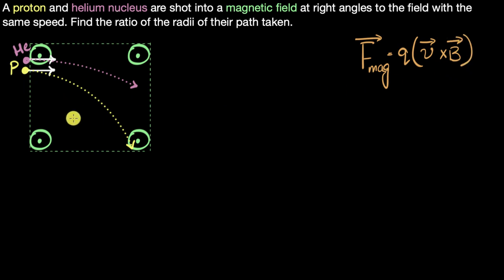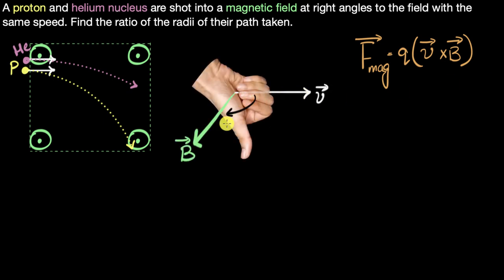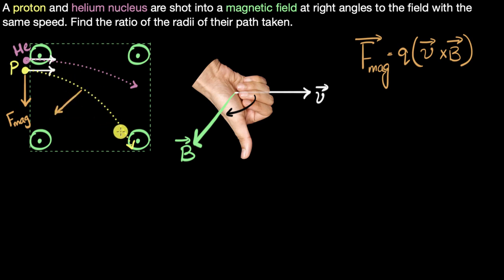That's the force acting on them. The direction of the magnetic force will be in the direction of V cross B. If you take the proton, the velocity is to the right and the magnetic field is coming out of the screen. Crossing from the velocity vector to the magnetic field vector, the thumb points downwards with your right hand, so the magnetic force acts downwards, making the proton turn downwards. The beauty of this magnetic force is that it will always be perpendicular to the velocity vector, always pointing towards the center, acting as a centripetal force.